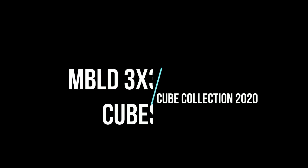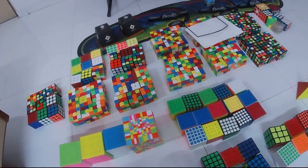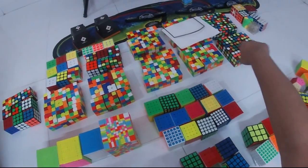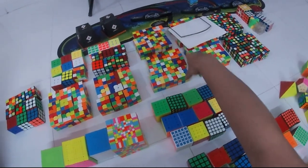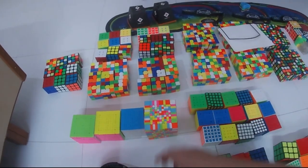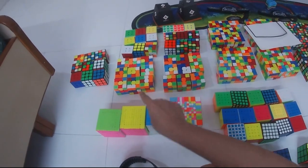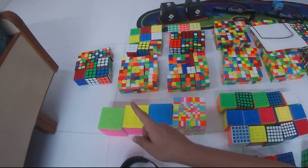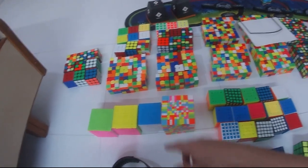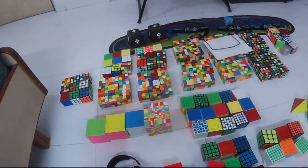Now here as you can see, these are all the MBLD cubes that I have, there are about a hundred of them. These ones are GuanLongs, these ones are YuXin Little Magic, these ones are random stickerless cubes, these ones are MoYu black sticker ones, there are three white cubes here, here are budget stickerless ones.